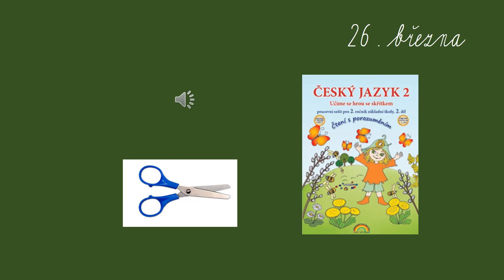Vystřídni si vzadu v sešitě kartičky V a F a potom si čti slova a říkej, proč tam zrovna bude právě V nebo F.